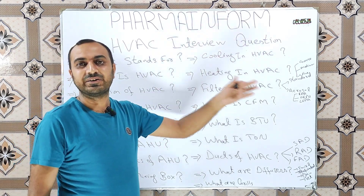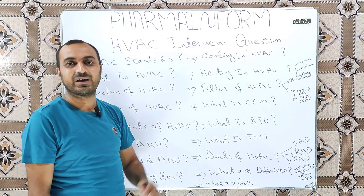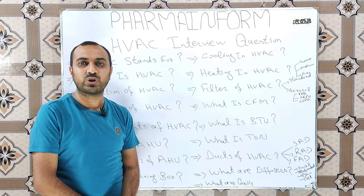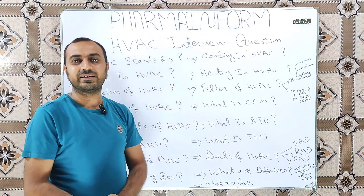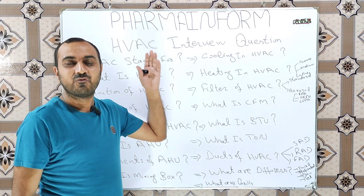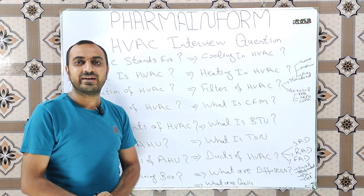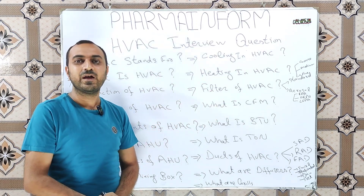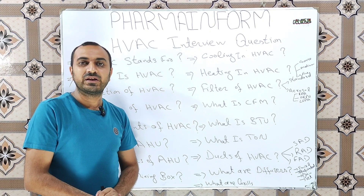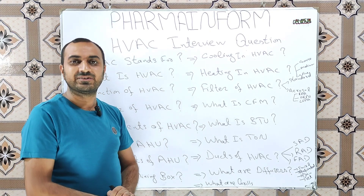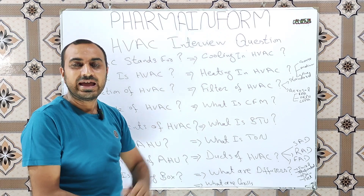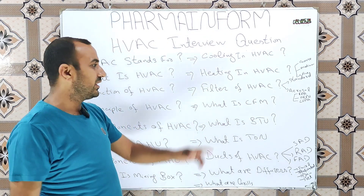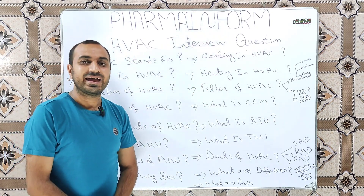The next question is: what is heating in HVAC, or tell us about the heating coils of HVAC? Heating in HVAC is of two types: direct heating and indirect heating. In direct heating, we use heaters to heat the air. In indirect heating, similar to the chilled water circulation system, we use water to generate steam, and this steam is circulated in the coils. When air passes through the coil, it gets hot. That is all about the heating system of HVAC.